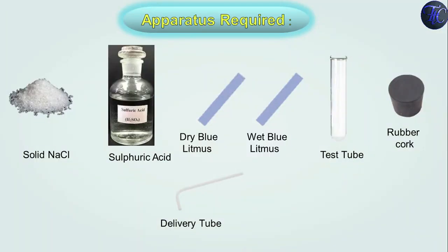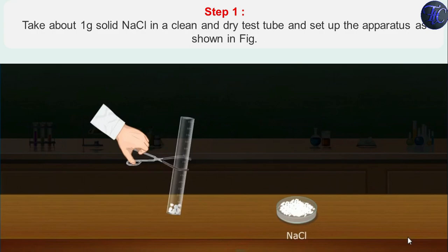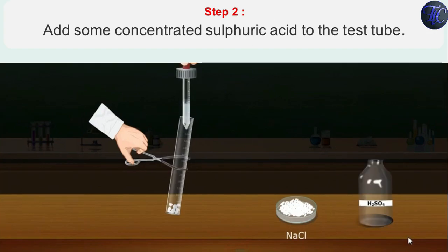Apparatus required for this activity are solid NaCl, concentrated sulfuric acid, dry blue litmus paper, wet blue litmus paper, test tube, rubber cork and delivery tube. Step 1: Take about 1 gram of solid NaCl in a clean and dry test tube and set up the apparatus as shown in figure. Step 2: Add some concentrated sulfuric acid to the test tube.